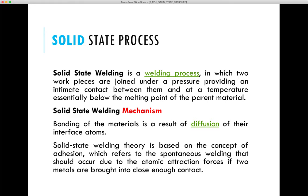All solid state welding processes are based on this concept and use some combination of heat, pressure, and time to overcome these barriers — oxides, contaminants, and surface roughness. The approaches are divided into various types such as friction welding, diffusion welding, explosion welding, and ultrasonic welding, which will be covered in later slides.